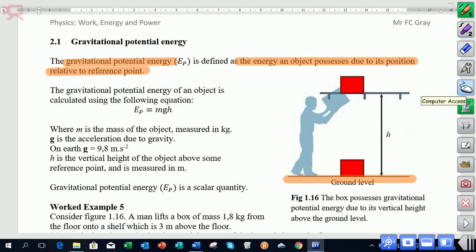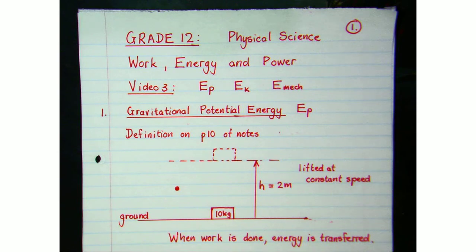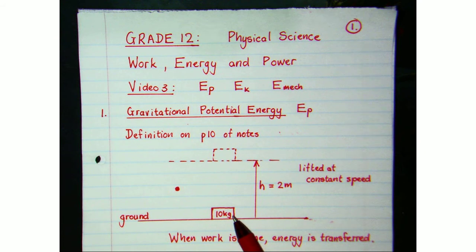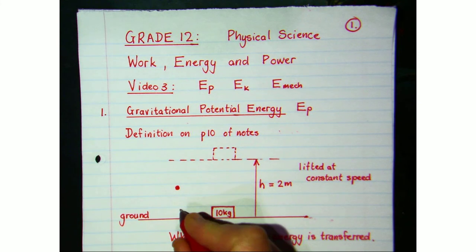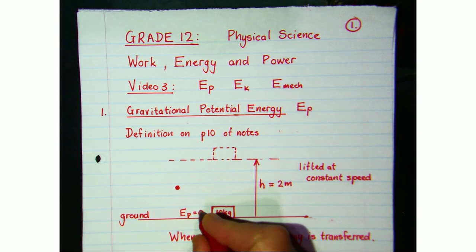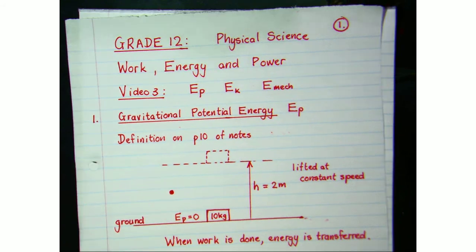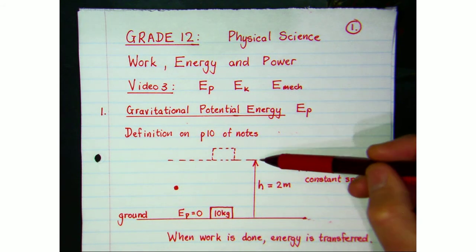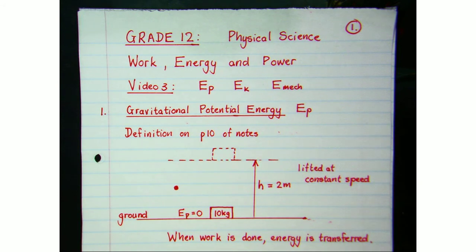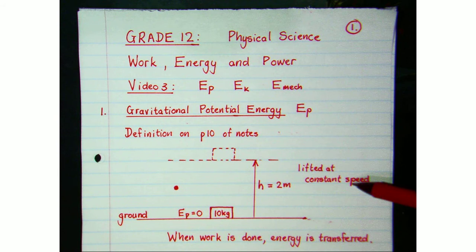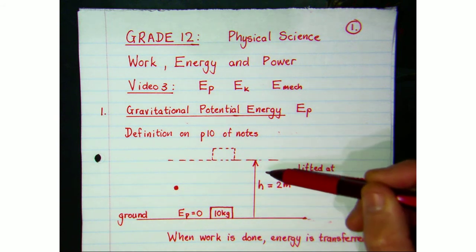Let's look at a really simple example. We've got a box lying on the floor, and because it's on the reference point — ground level — its potential energy is defined as zero. We're going to lift that box up to a shelf which is two meters higher, lifting it at constant speed so that we don't give it any extra kinetic energy as it goes up.